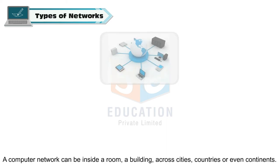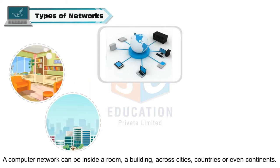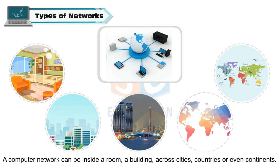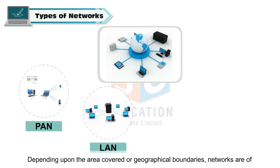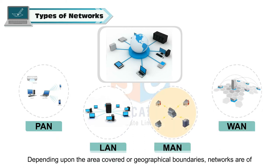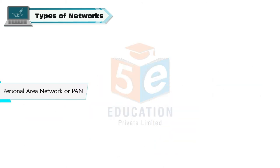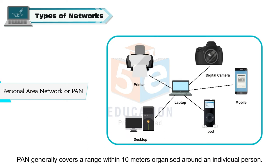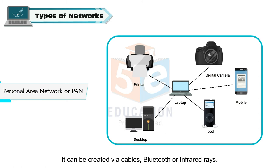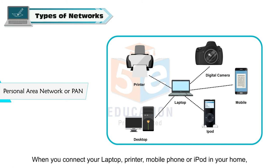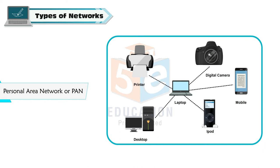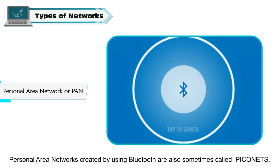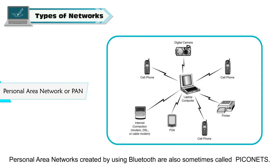Types of networks: a computer network can be inside a room, a building, across cities, countries, or even continents. Depending upon the area covered or geographical boundaries, networks are of different categories. Personal Area Network or PAN generally covers a range within 10 meters, organized around an individual person. It can be created via cables, Bluetooth, or infrared rays. When you connect your laptop, printer, mobile phone, or iPod at home, you are creating a PAN. Personal area networks created using Bluetooth are also sometimes called PICONETs.